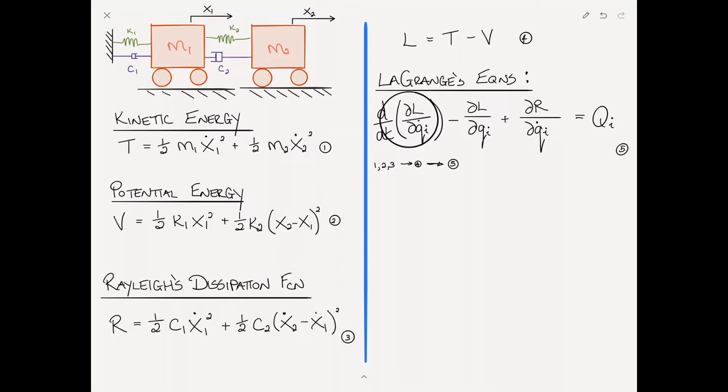Let's take the first term, the derivative of the Lagrangian with respect to Q dot i, then the time derivative. For the x1 equation, only the first term from kinetic energy survives, giving m1 x1 dot, then the time derivative gives m1 x1 double dot. This term survives from potential energy, and the minus and minus becomes plus, giving k1 x1.